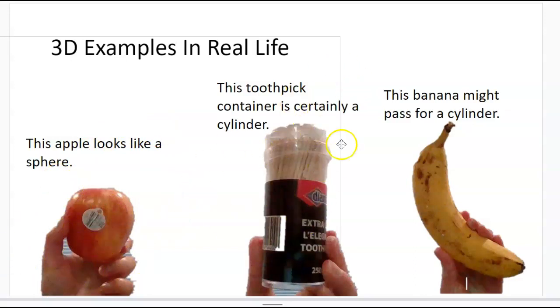This toothpick container obviously is a cylinder. And this banana most closely represents a cylinder.